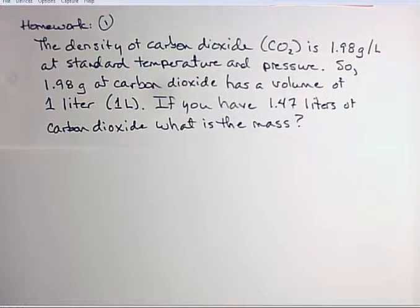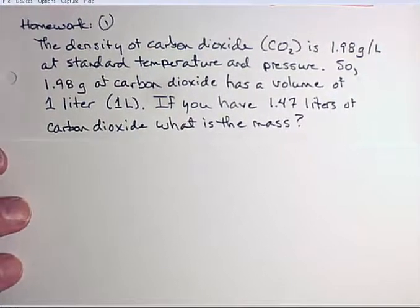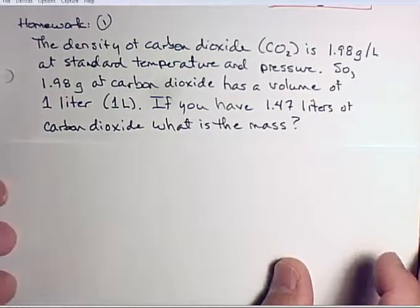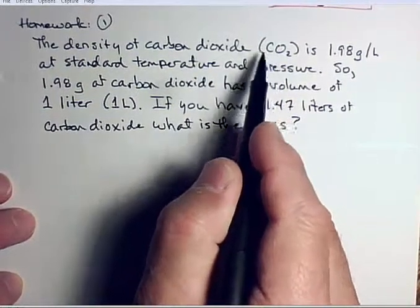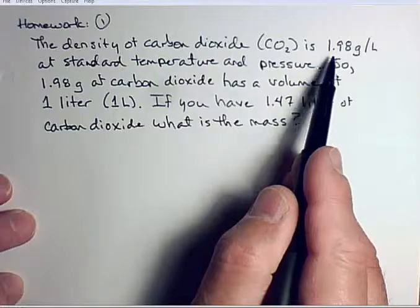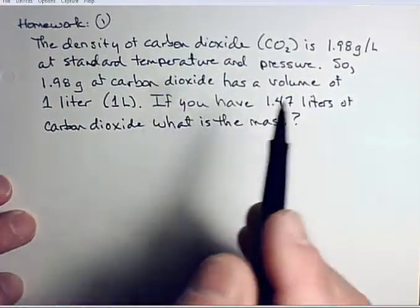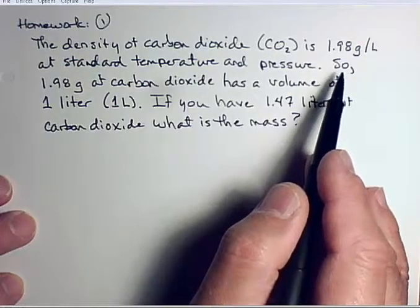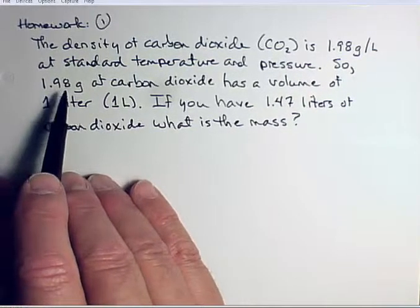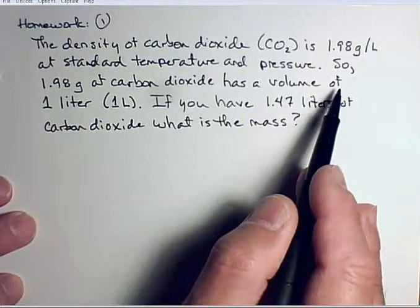All right, so this is the next homework problem that was assigned. It states that the density of carbon dioxide (CO2) is 1.98 grams per liter at standard temperature and pressure. And then it explains to you that 1.98 grams of carbon dioxide has a volume of one liter.